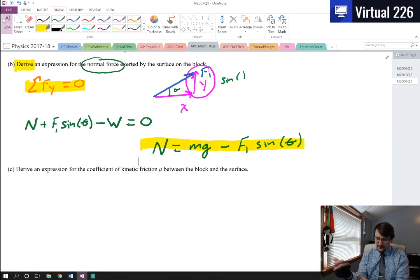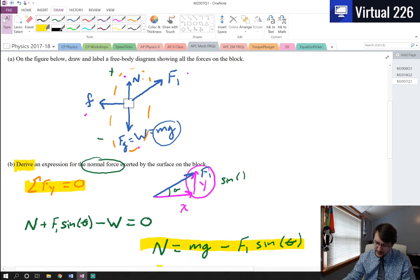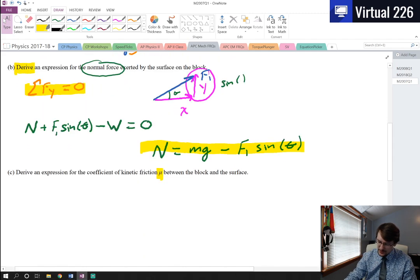Even though this says derive, we're not actually taking a derivative. We're just setting up the equation from a first principle. So it's very important that we write out our F equals MA setup, and then our final answer. That's two points right there. If we want an expression for the coefficient of kinetic friction mu between the block and the surface, well, now we need to start looking at left and right directions.